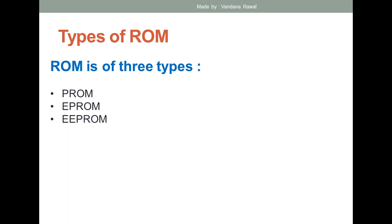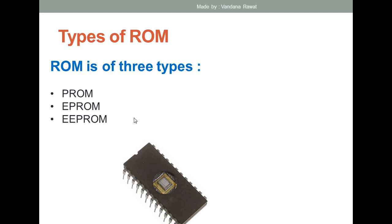Now, there are basically three types of ROM. The first is PROM, which stands for Programmable Read-Only Memory. The second type is EPROM, which means Erasable Programmable Read-Only Memory. The third type is EEPROM, which stands for Electrically Erasable Programmable Read-Only Memory. This is basically a picture related to ROM — ROM basically looks like this image.